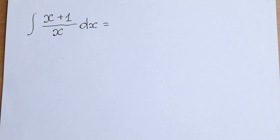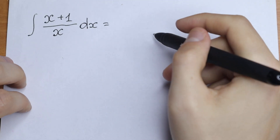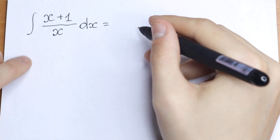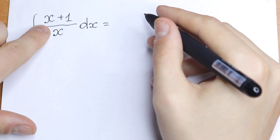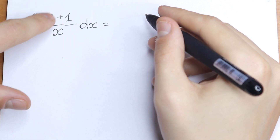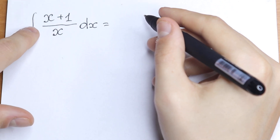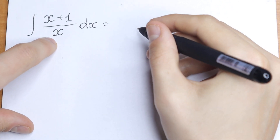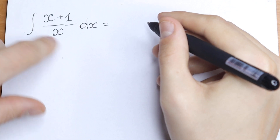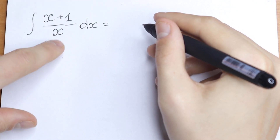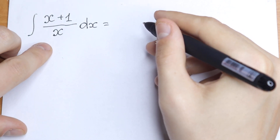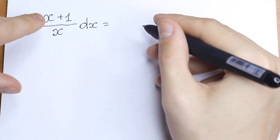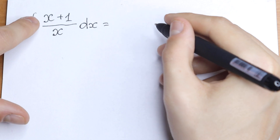Hello everyone, welcome back to High Mathematics. Today we have an interesting integral: (x + 1) over x, dx. So how can we solve this integral? I want to suggest a really good trick to solve it.